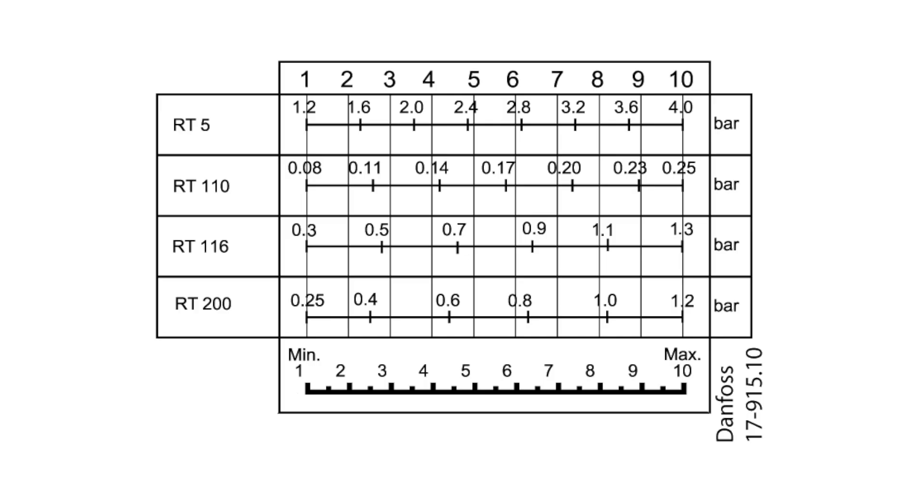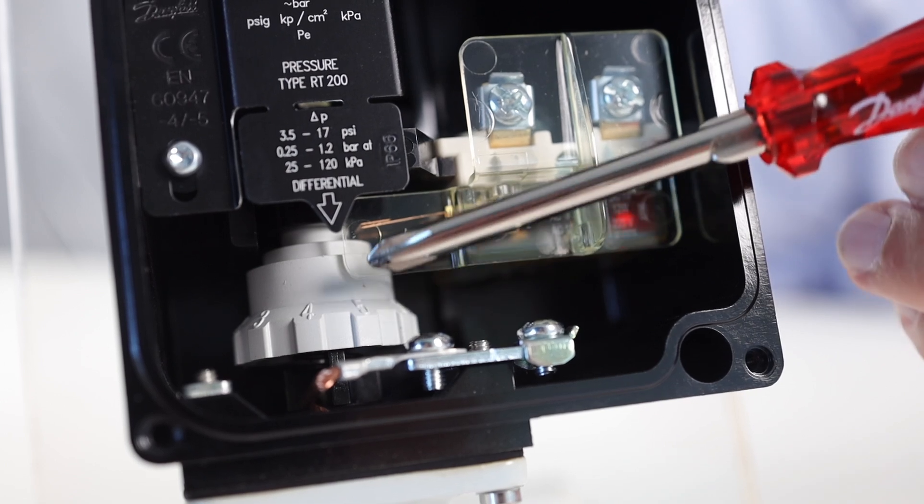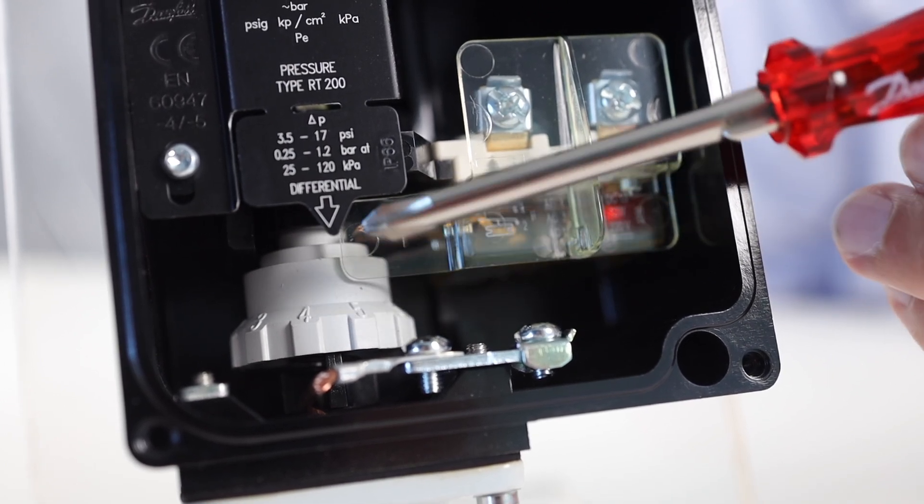If you, for example, need a differential pressure level of 0.6 bar, you must adjust the setting to 4.5 with the setting nut. Let's look at the cutoff for rising pressure.